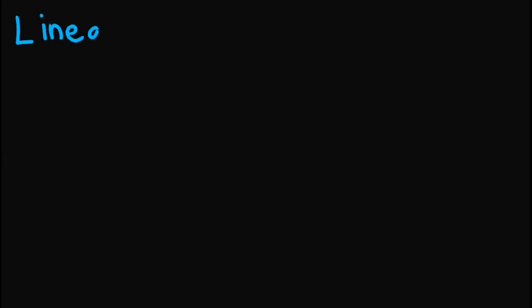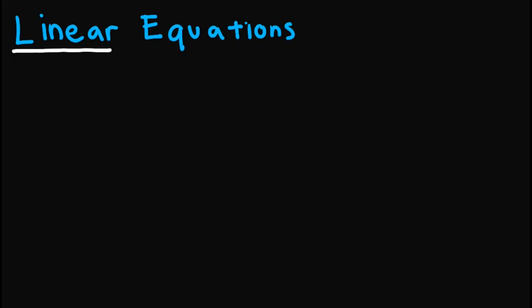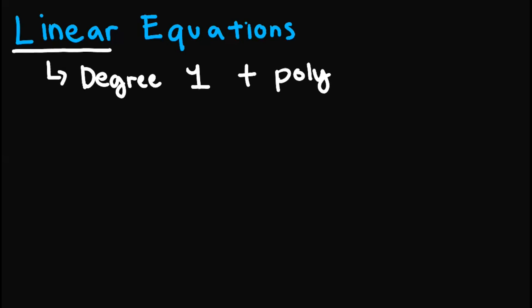Linear equations. So when we say linear equations, from the word itself linear, this means that its degree is 1, and it must be a polynomial.